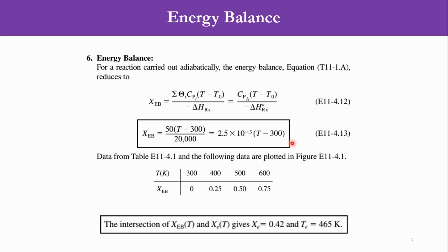Now going to the energy balance, because we want to know the equilibrium conversion. For an adiabatic reaction, the energy balance reduces to: Xeb = [ΣΘi·Cpi·(T - T0)] / (-ΔHRx). With only species A: Xeb = [CpA·(T - T0)] / (-ΔHRx). CpA = 50, -ΔHRx = +20,000, T0 = 300 K. So the expression becomes: Xeb = 2.5×10⁻³·(T - 300). Substituting T = 300, 400, 500, and 600 K gives Xeb = 0, 0.25, 0.5, and 0.75 respectively.